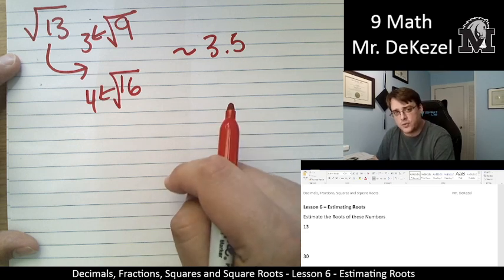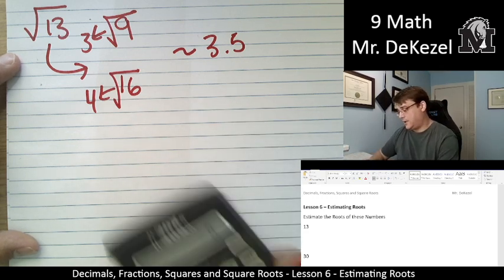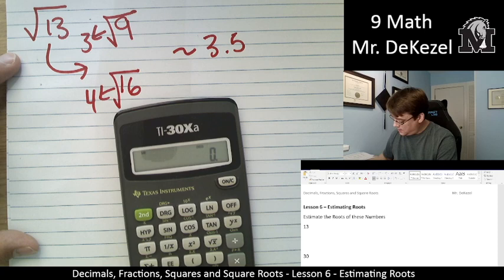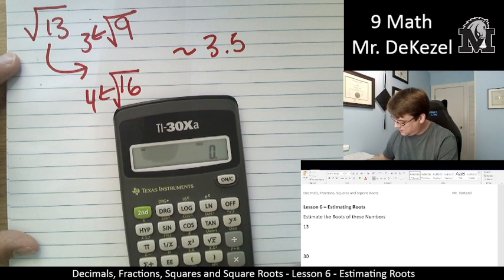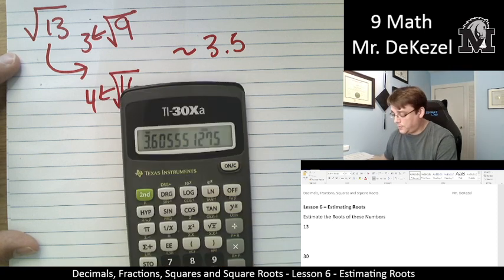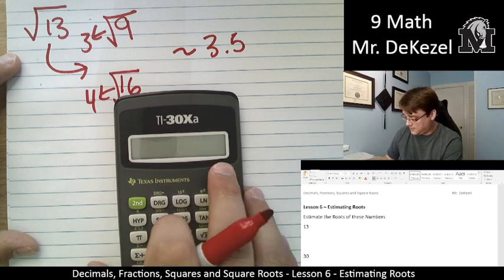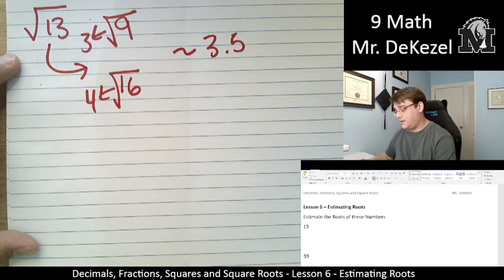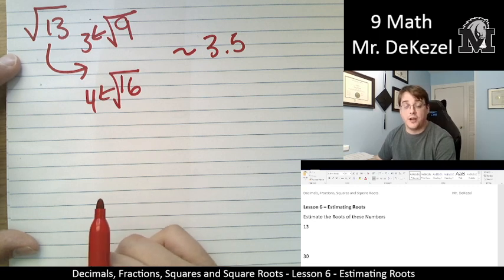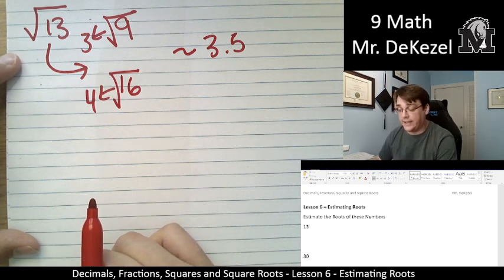Let's just do this real quick. Square root of 13 is 3.6. So that would be totally acceptable to estimate 3.5. What we're doing is estimating. We're not memorizing or getting exact values.